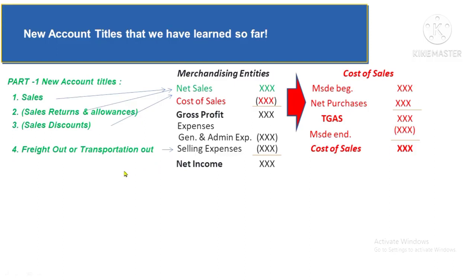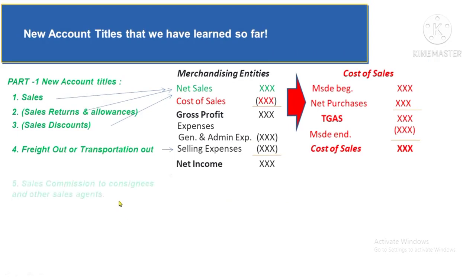An additional point: freight cost incurred to deliver goods to consignees, if you are the consignor, is not freight out — it is classified as freight in. Freight in is the direct cost of bringing inventories to the selling area. If you are the consignor, the selling area is the consignee's premises, so any cost bringing your inventories there is freight in. Also remember, freight is not only transportation cost — it includes labor for lifting and transfer of goods and other related costs. Another selling cost example is sales commission paid to selling agents and consignees.